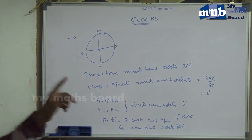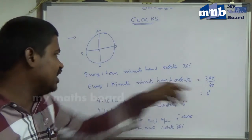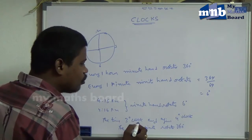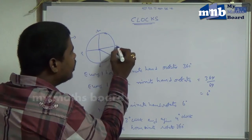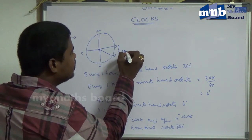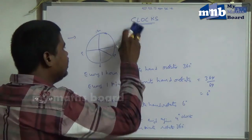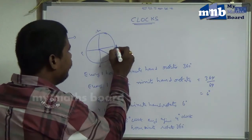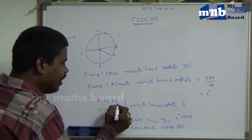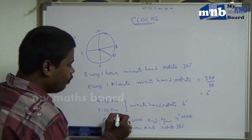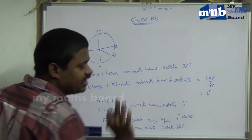It's a very important thing. Again, I will repeat. Every 1 hour, the minute hand rotates 360 degrees. For example, the time is 3 o'clock, and the next 1 hour the time is 4 o'clock. And again, the time is 4:15 PM, and at 4:16 PM — 1 minute has gone — the minute hand rotates 6 degrees.